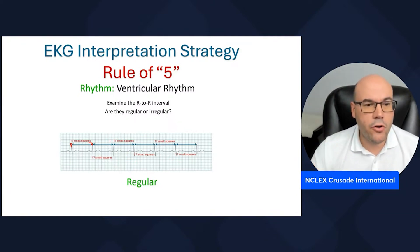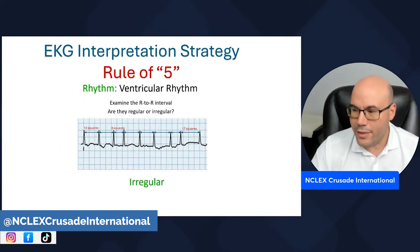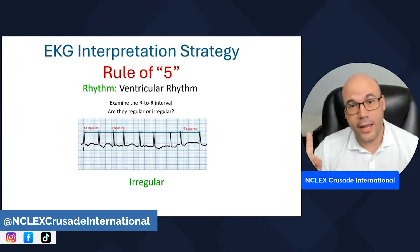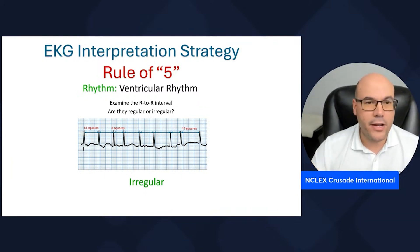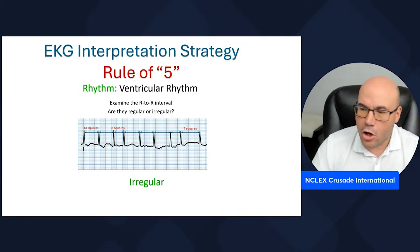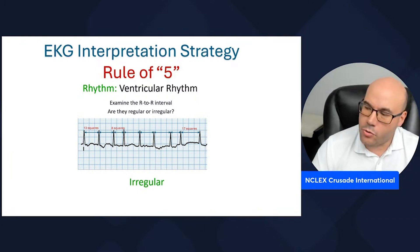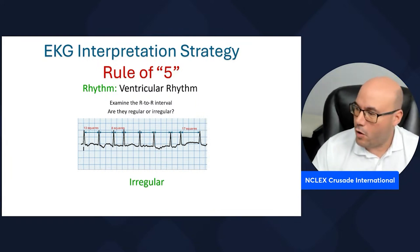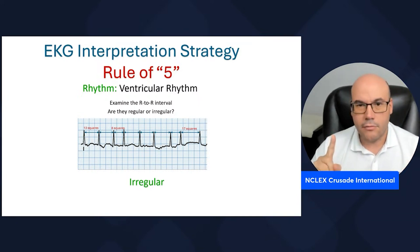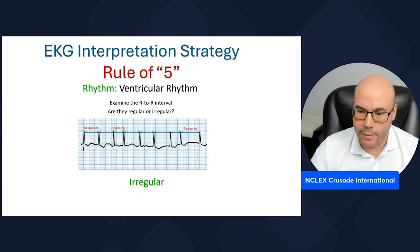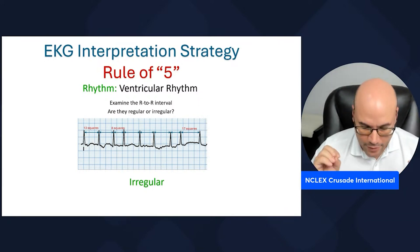Now here's an example of an irregular rhythm. When you count the small squares in the R to R intervals, you'll see they vary. For example, the first R to R interval has 13 squares, the third has 8 squares, and the last has 17 squares. Since the counts differ, unlike the first strip, this rhythm is irregular. That's how you identify if a rhythm is regular or irregular.